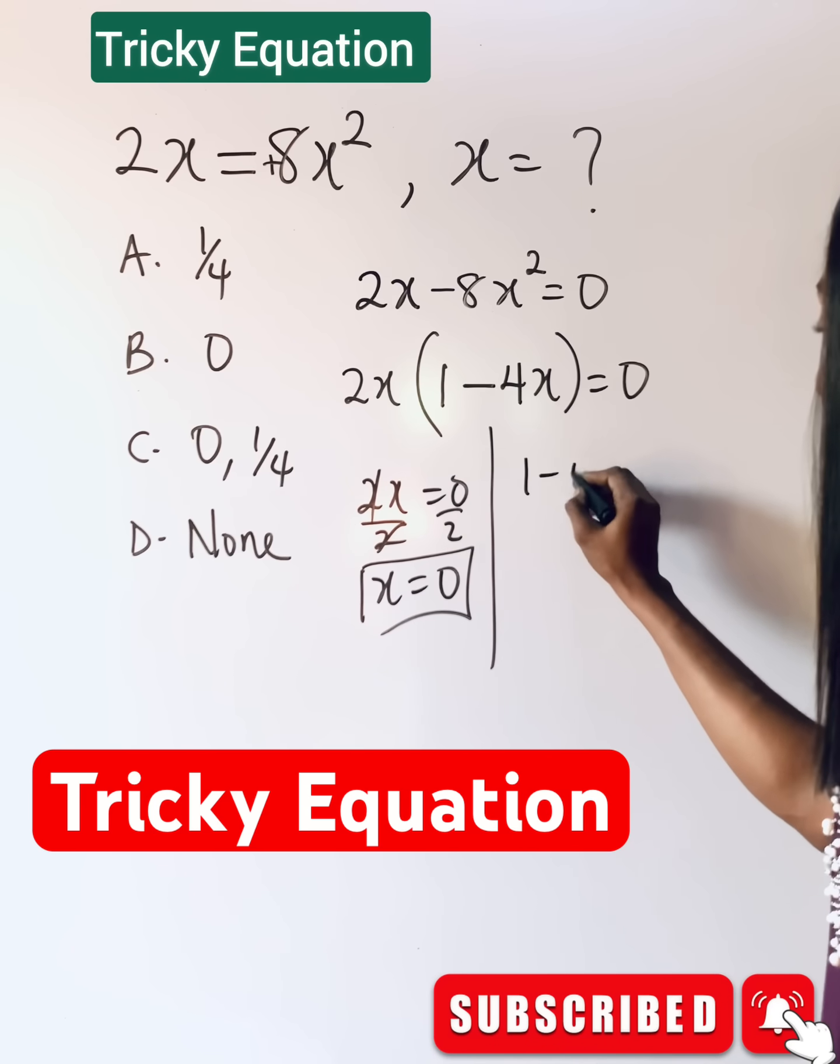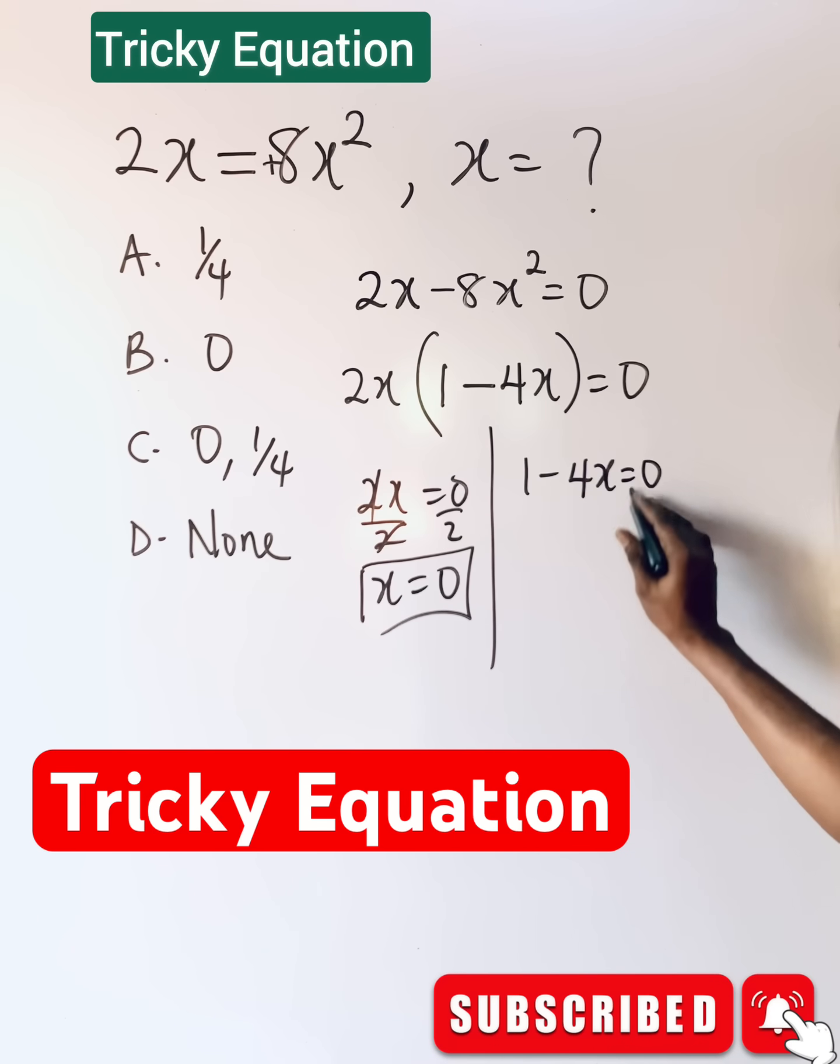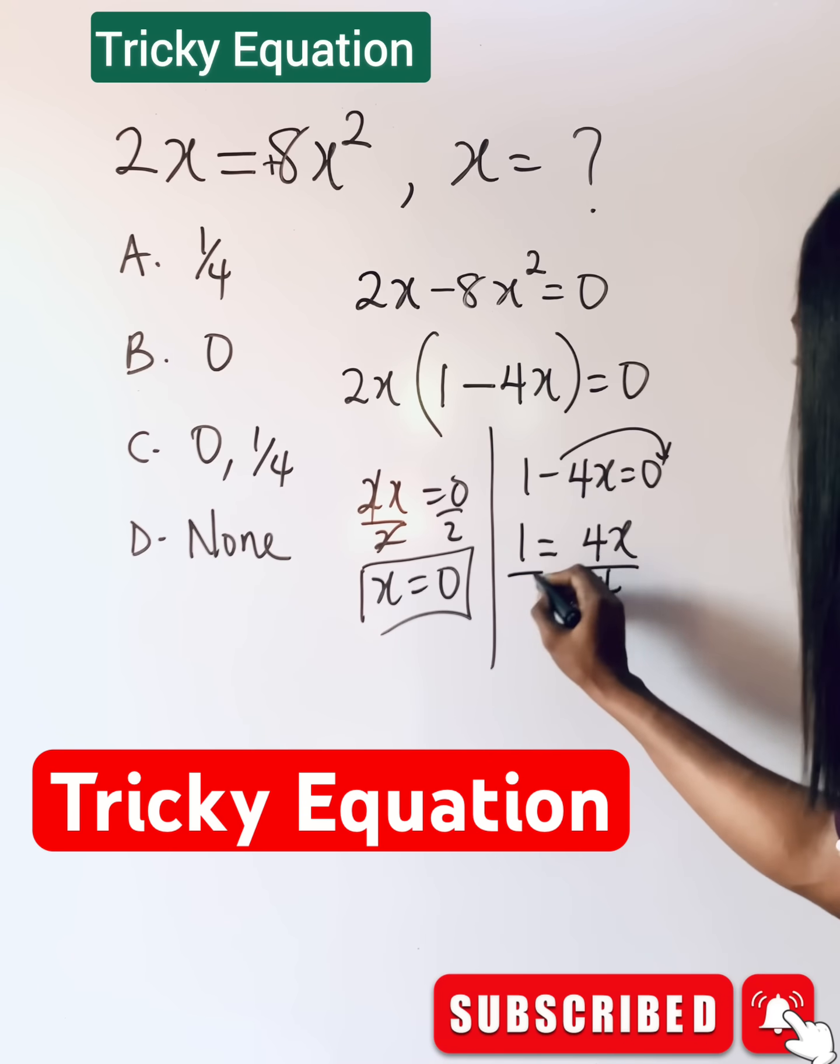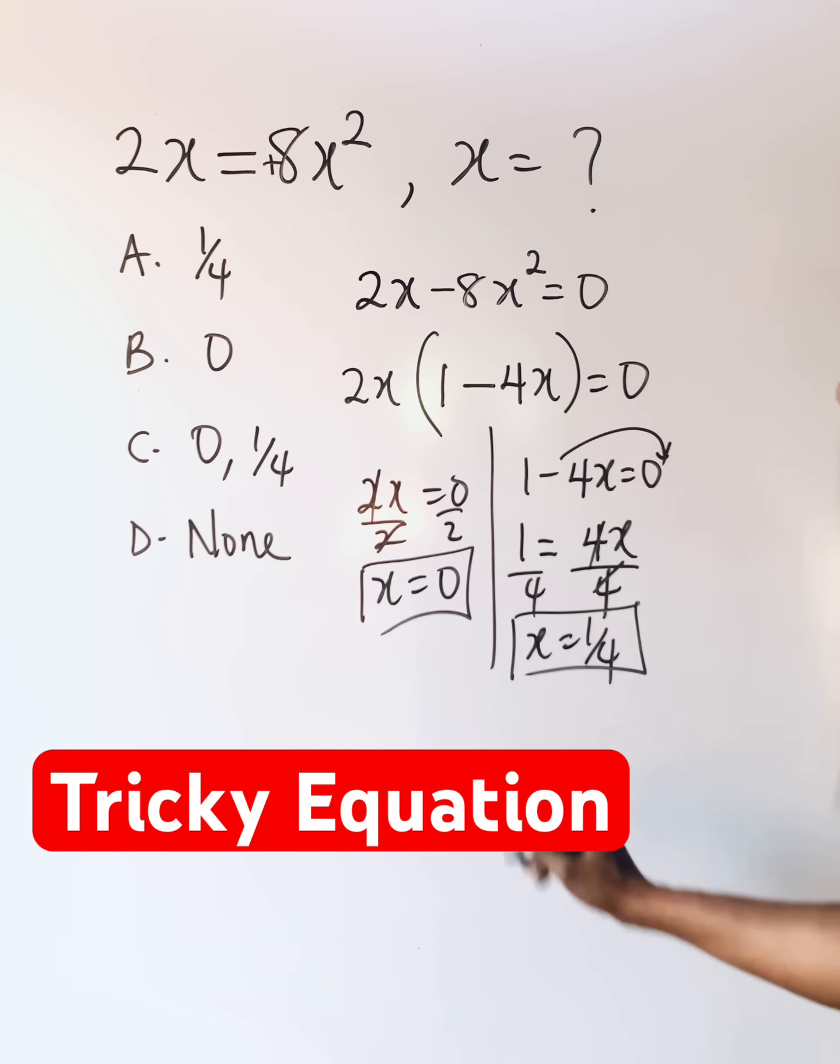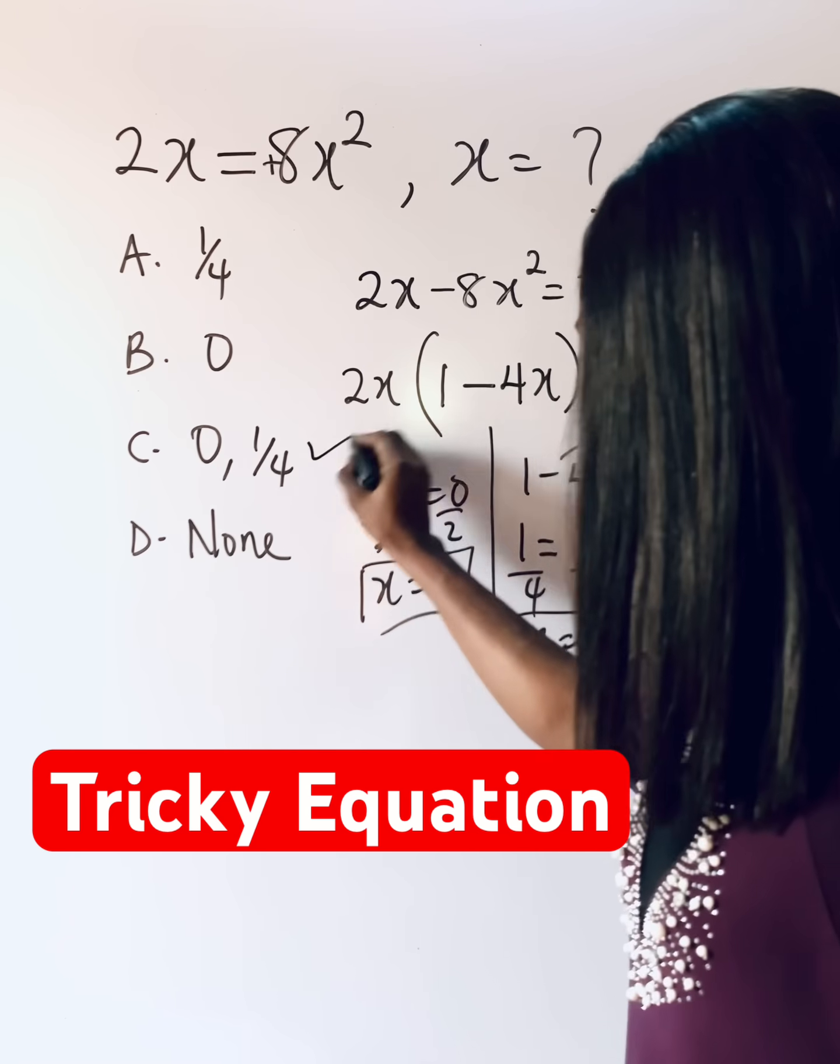And for this, you have 1 minus 4x is equal to 0. So you have 1 is equal to 4x. Divide by 4. So if you do that, x will give you 1 over 4. So the two answers for this is in option C.